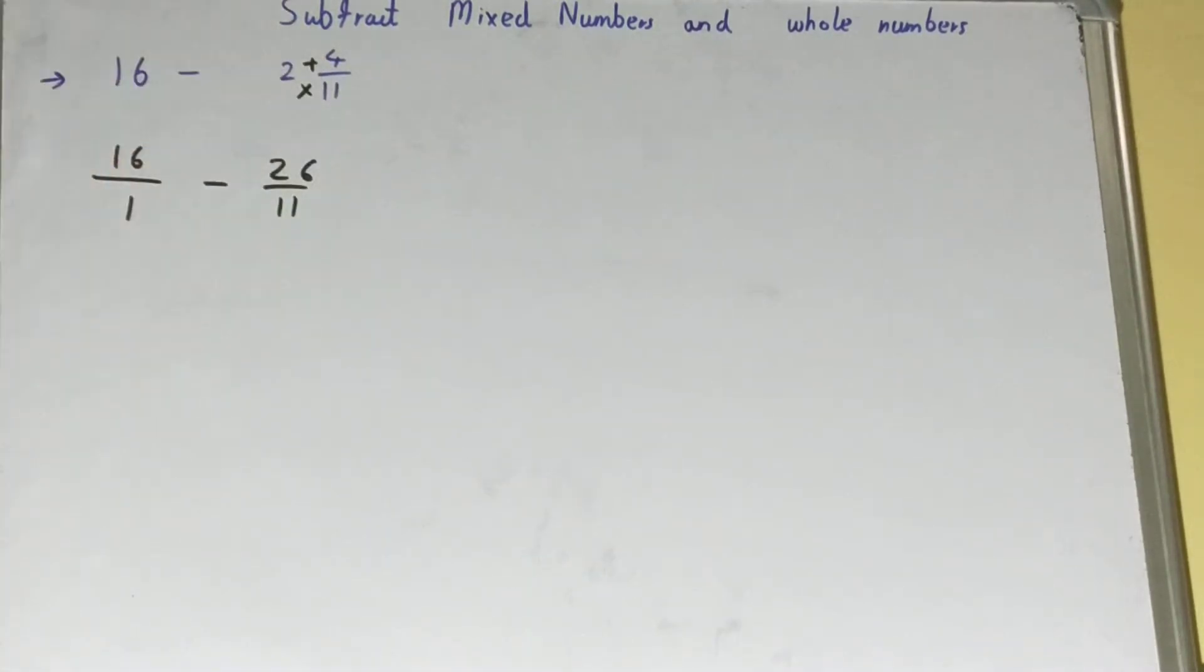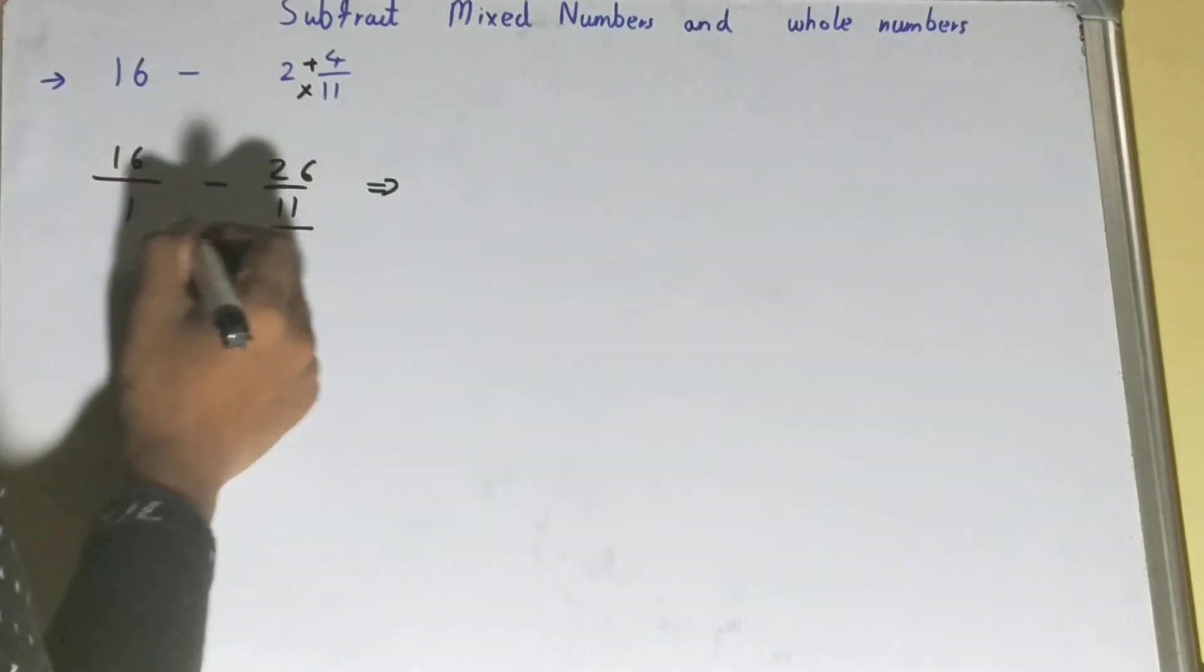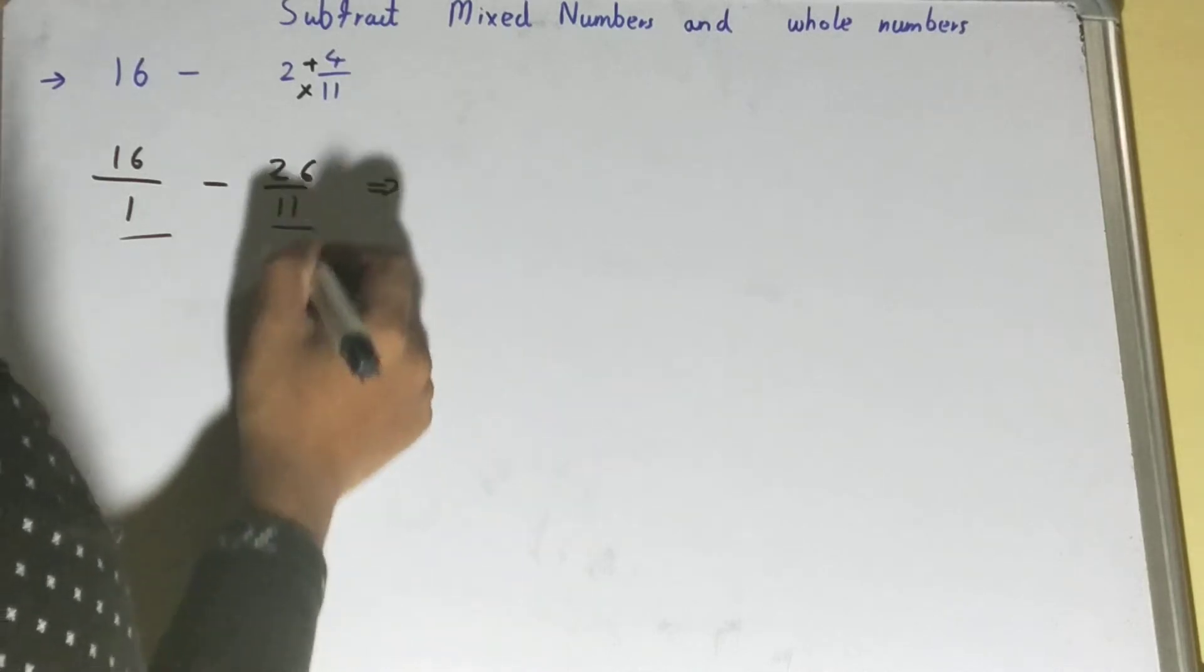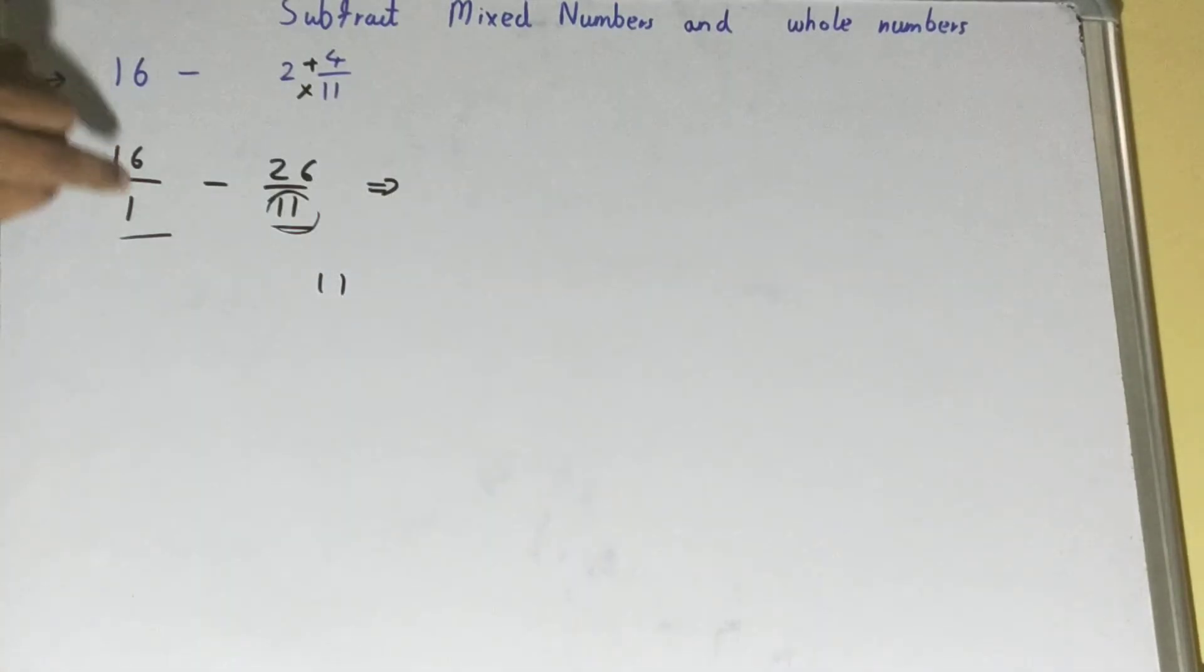Now for LCM there is a technique: you can just write the bigger number. Bigger number is 11, right, between these two denominators. So take the bigger number and write two, three multiples of it, and see whether the other number can divide it or not.